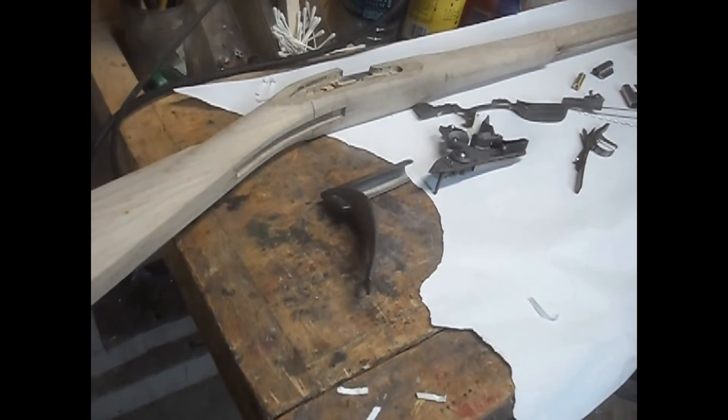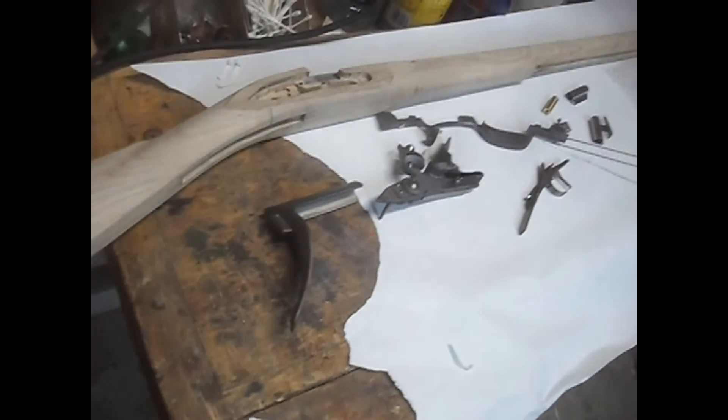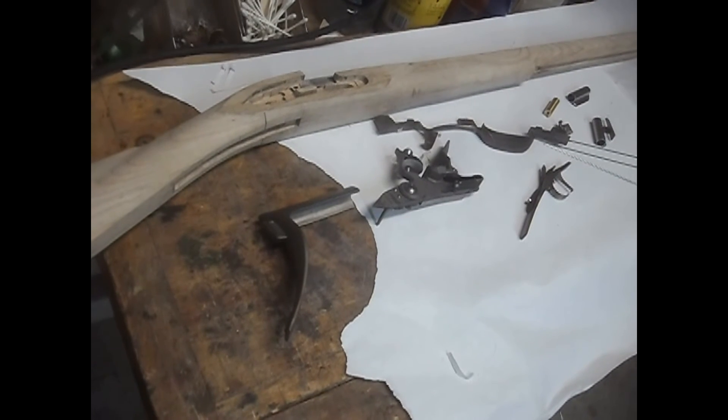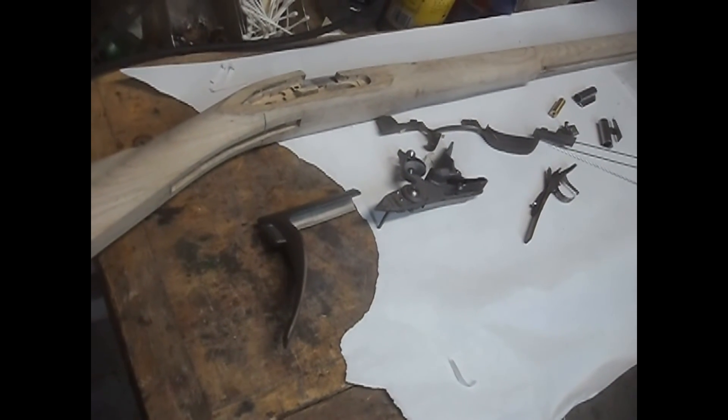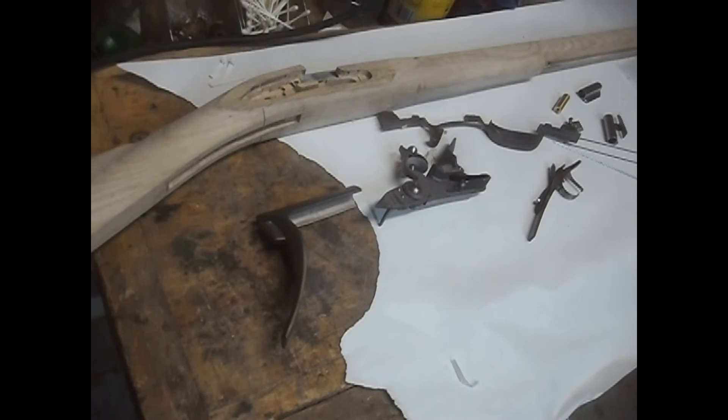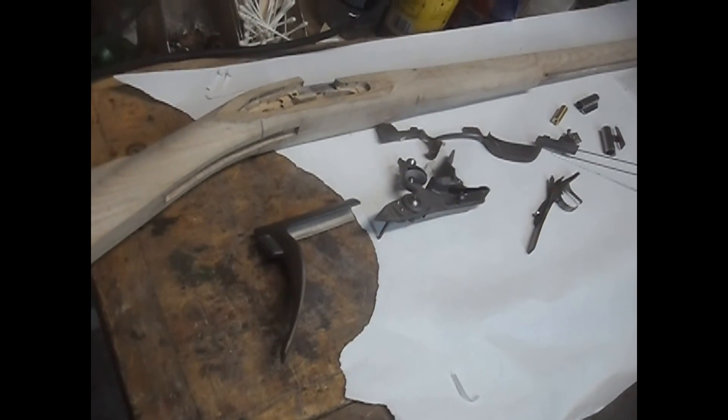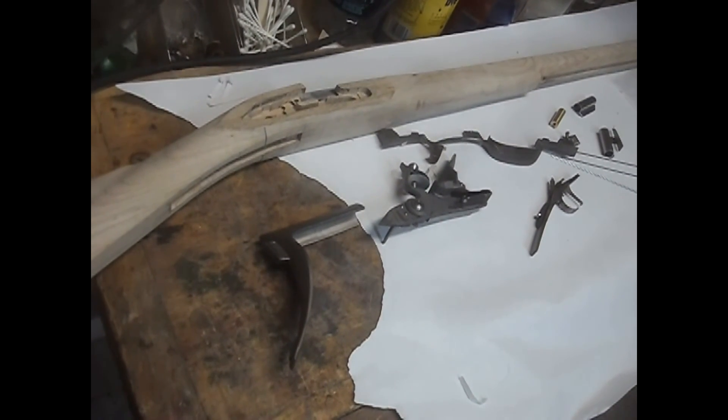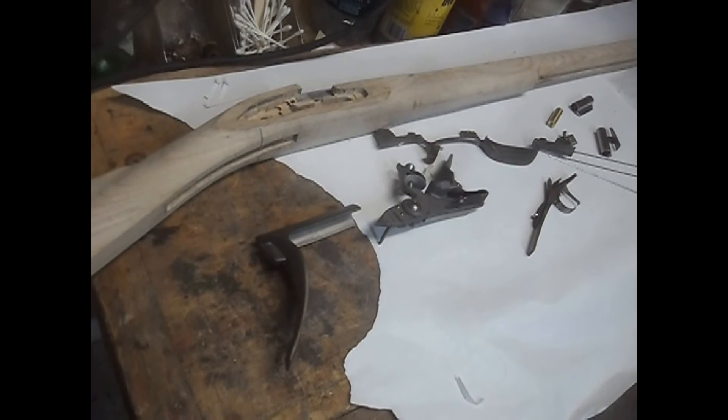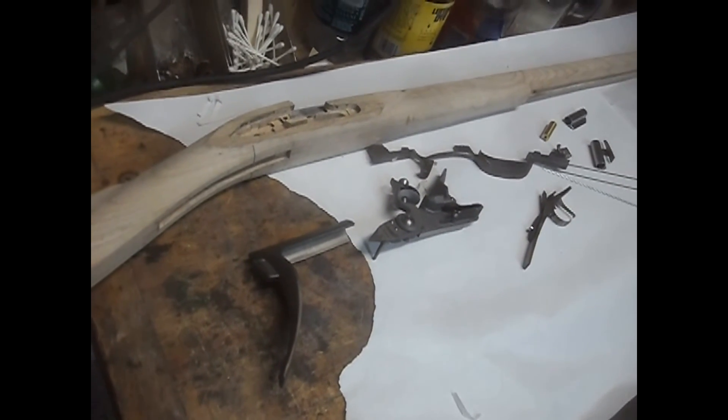So there you go, I've got my Tennessee long rifle poor boy 54 caliber kit that I'm going to be building and starting shortly. Castrick Bowcraft, thanks for watching.